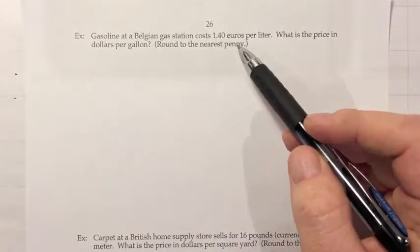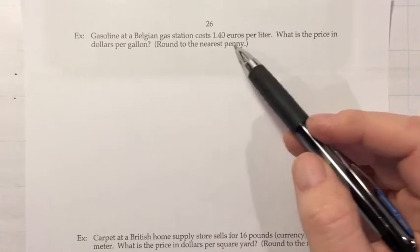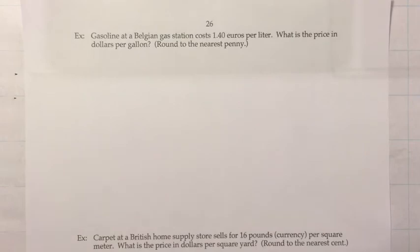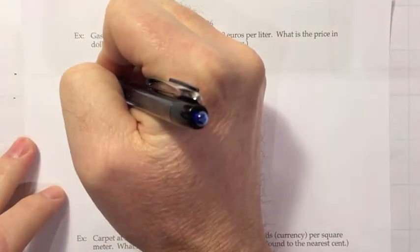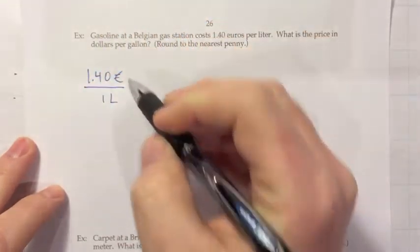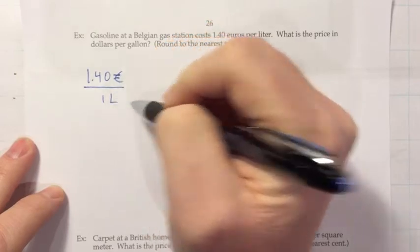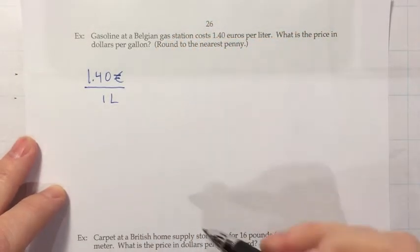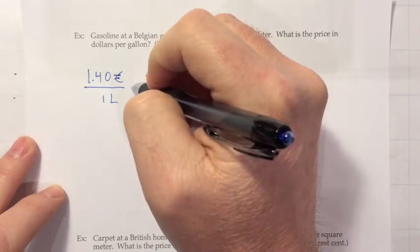Okay. A couple more conversions to finish off this section. Gasoline at a Belgian gas station costs 1.40 euros per liter. What is the price in dollars per gallon? It would definitely be pretty confusing when you're outside of the U.S. and you're thinking about the price of gas, because not only do they have a different type of money they're using, but then they're measuring it per liter instead of per gallon. So I mean that looks cheap. If that was dollars per gallon, that would be an inexpensive gas price. But is it really? So let's try and convert that. 1.40 euros per liter, so over one liter. And this time we want to get rid of both the euros that are in the top and the liters that are in the bottom. And you can do it in either order, but you cannot do both at the same time. So I'm going to handle the money first.